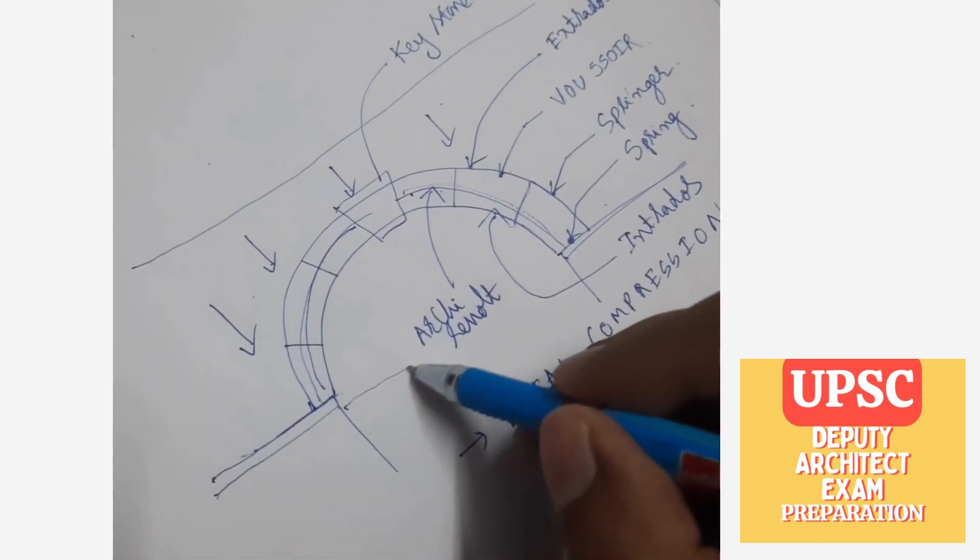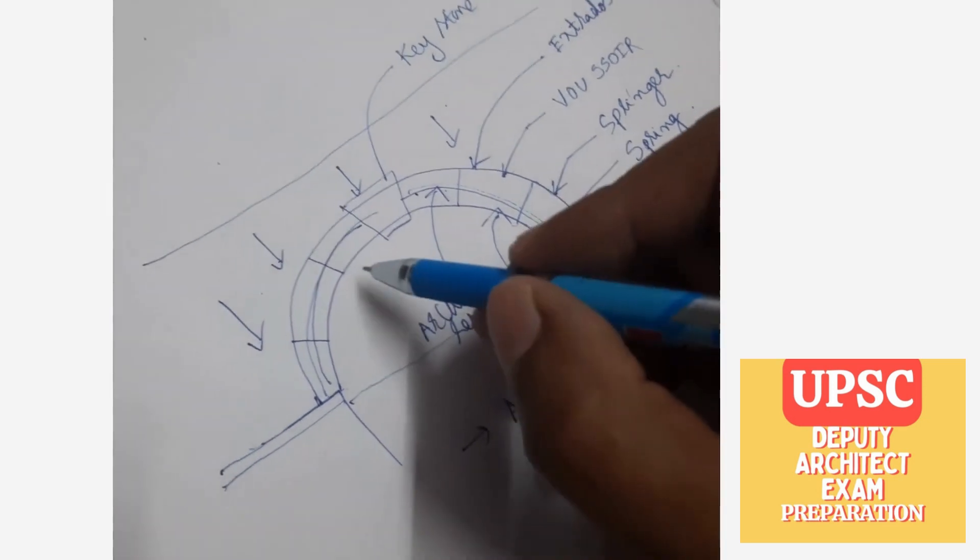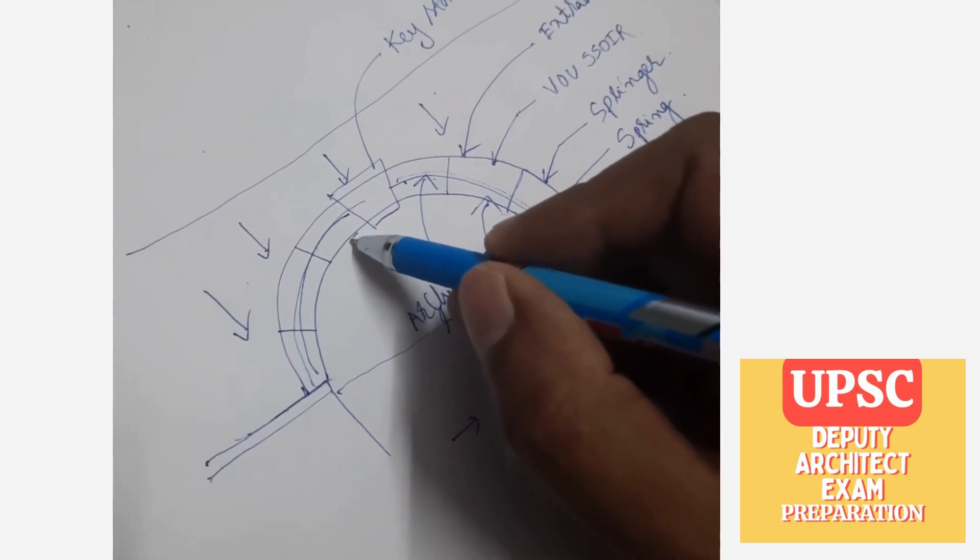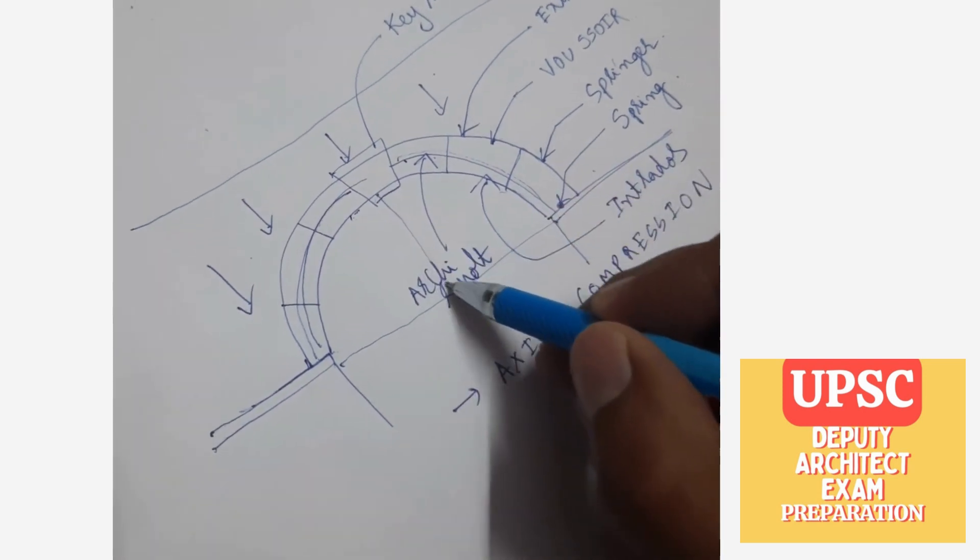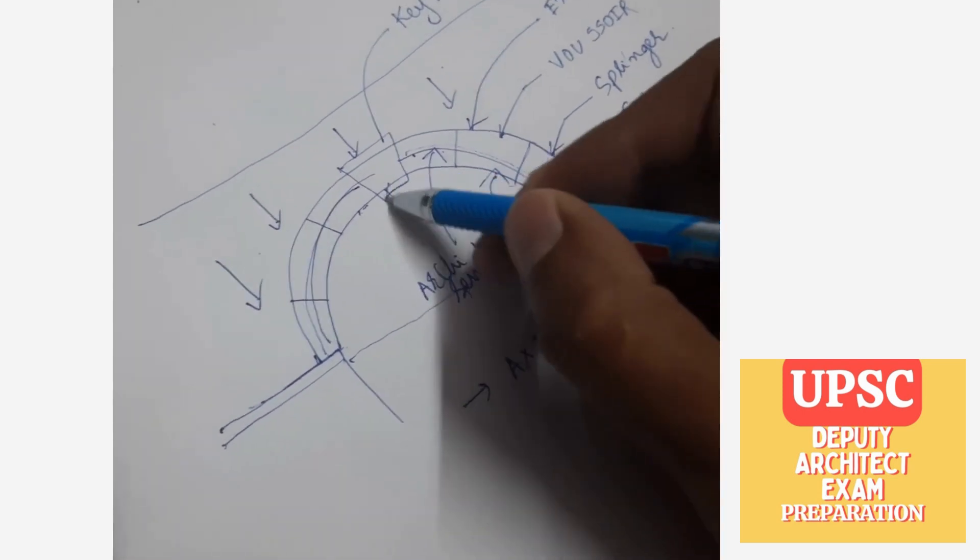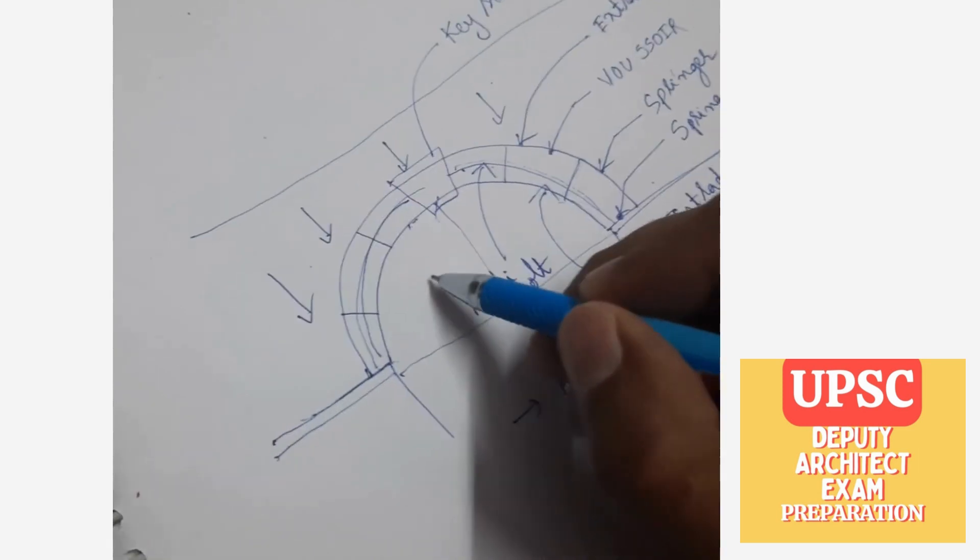And also, whatever is the height of arch from the midpoint of keystone to the horizontal of the imposed base, it is called rise.